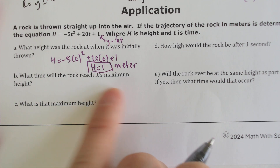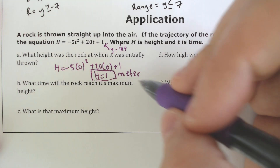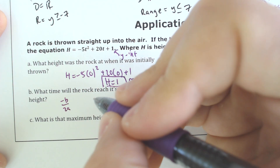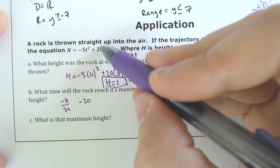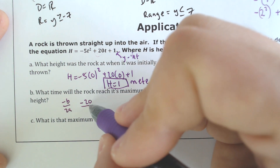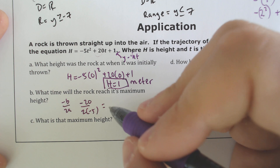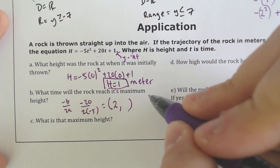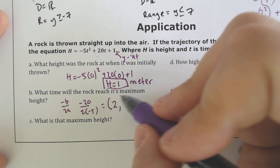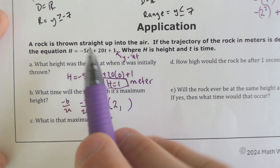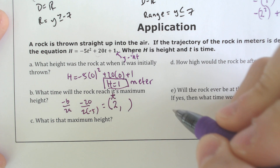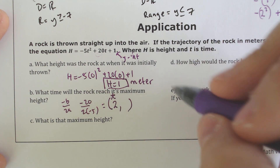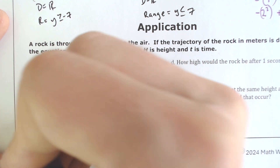What time will the rock reach its maximum height? The maximum height involves the vertex, so let's find the vertex. We got negative b over 2a — that would equal negative 20, because you have to change the sign of b, over 2 times negative 5. That ends up being negative 20 divided by negative 10, which ends up being 2. And notice how the x-values this time are t — so this is the time. The time that it reaches the maximum height would be 2 seconds.